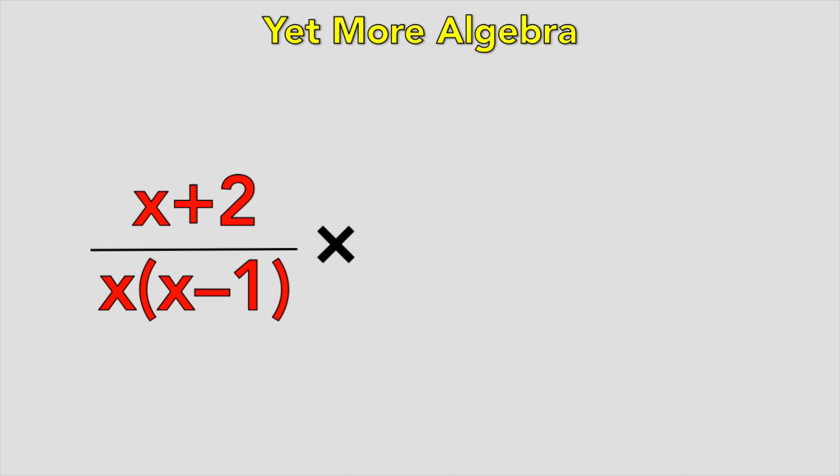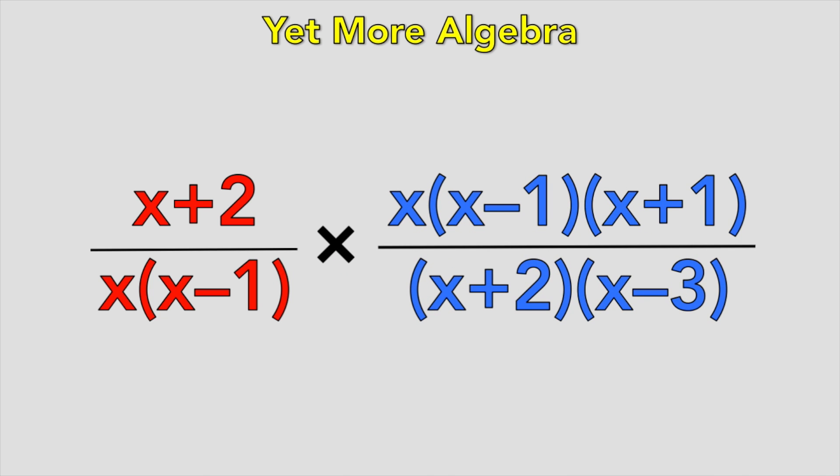The first one is just cancelling. When you multiply, you just multiply the top and bottom. So with something like this, it's like squishing them together. So any like terms on top and bottom, you can cancel like so. And you've got your answer without really doing anything. That's the kind of math that I can get behind.